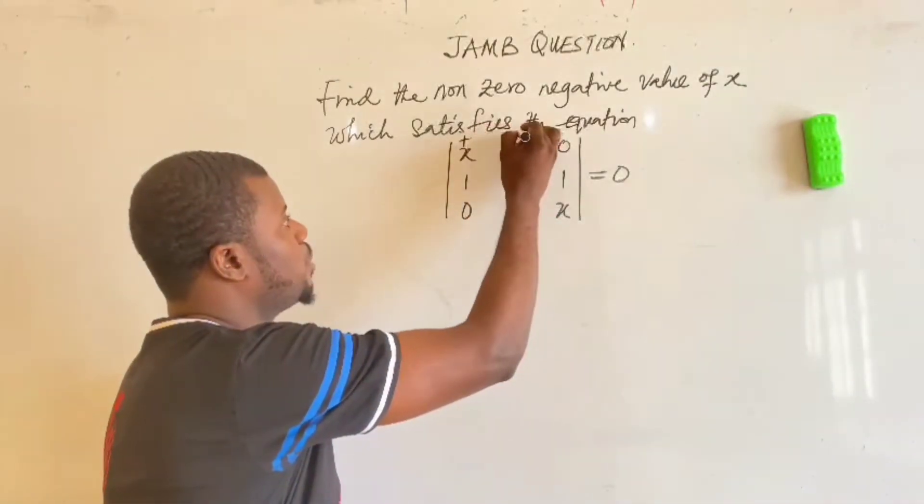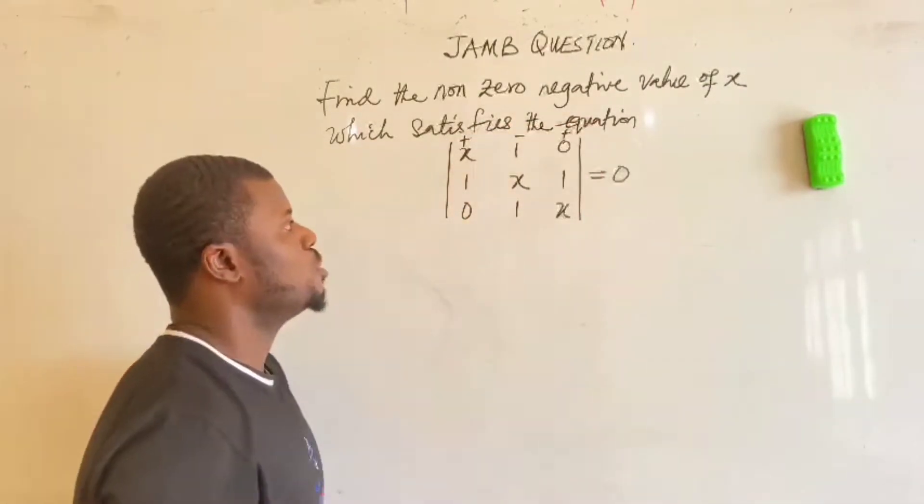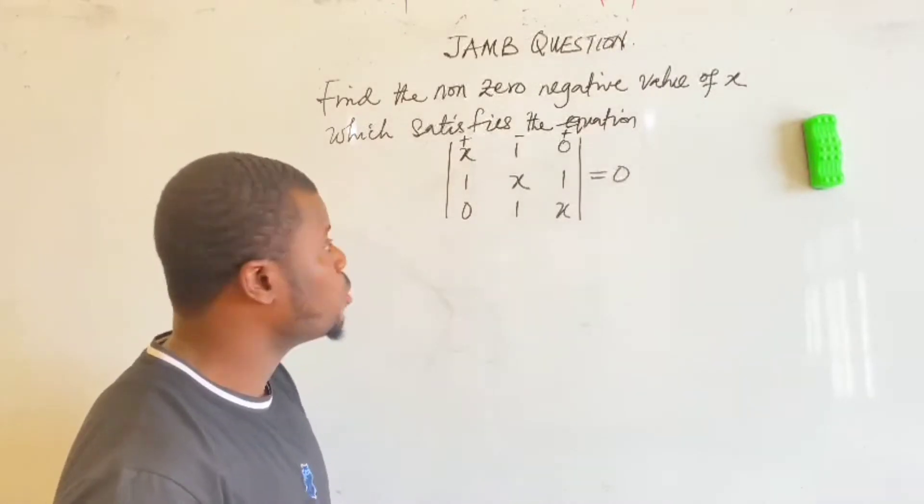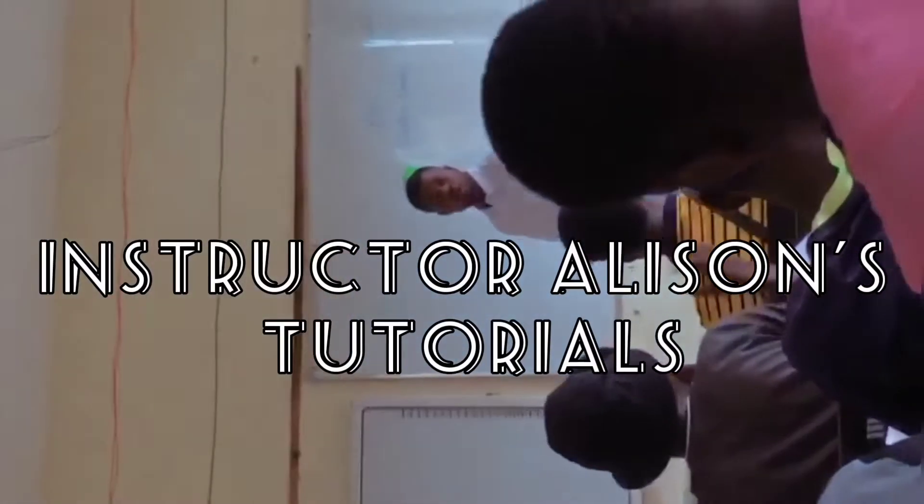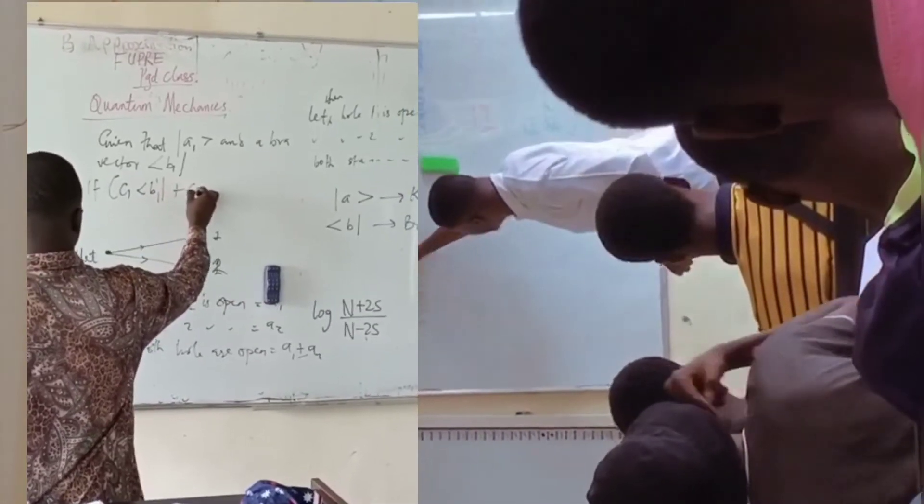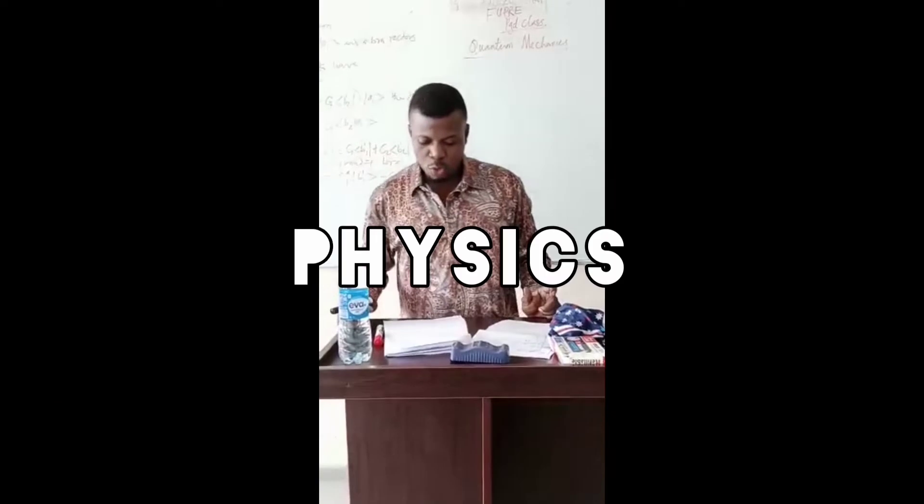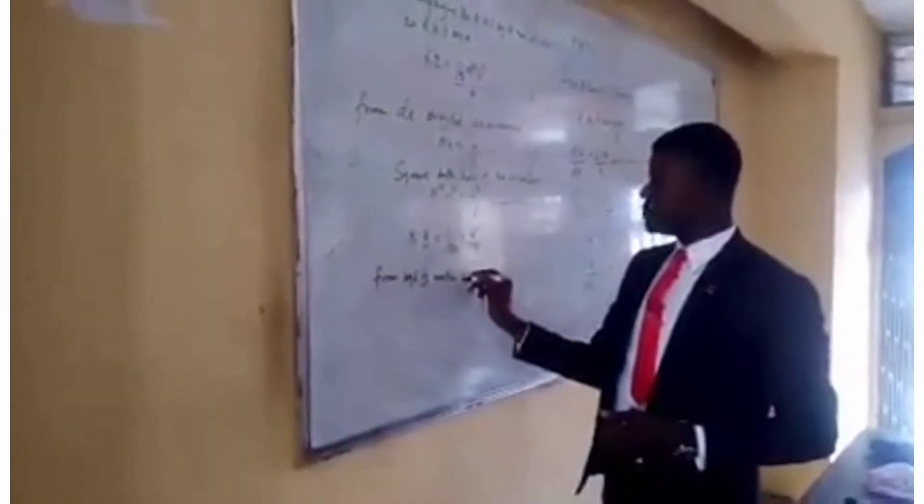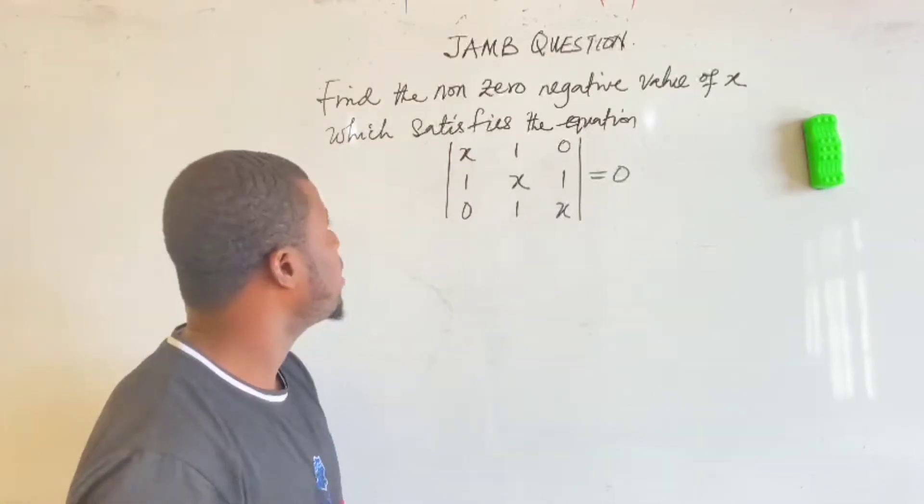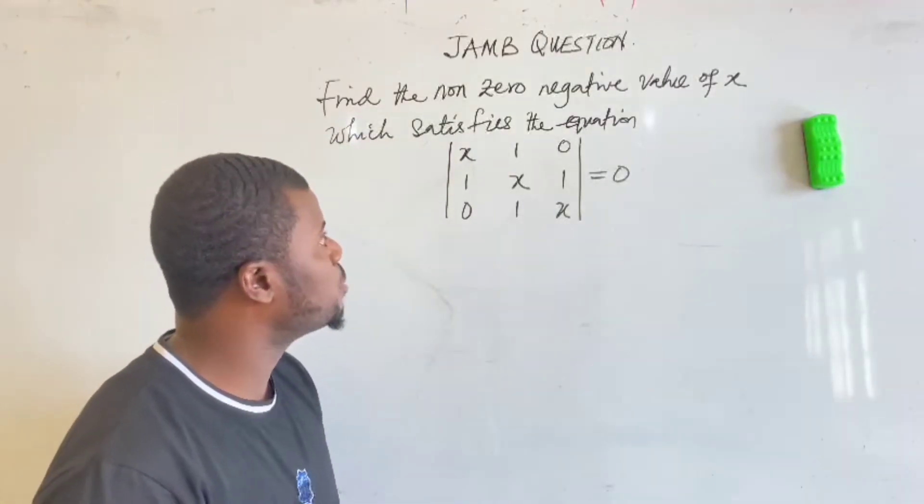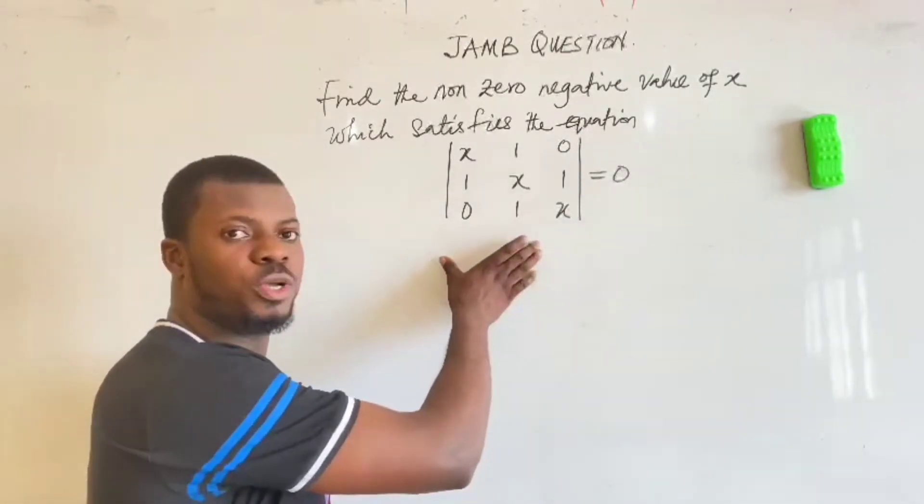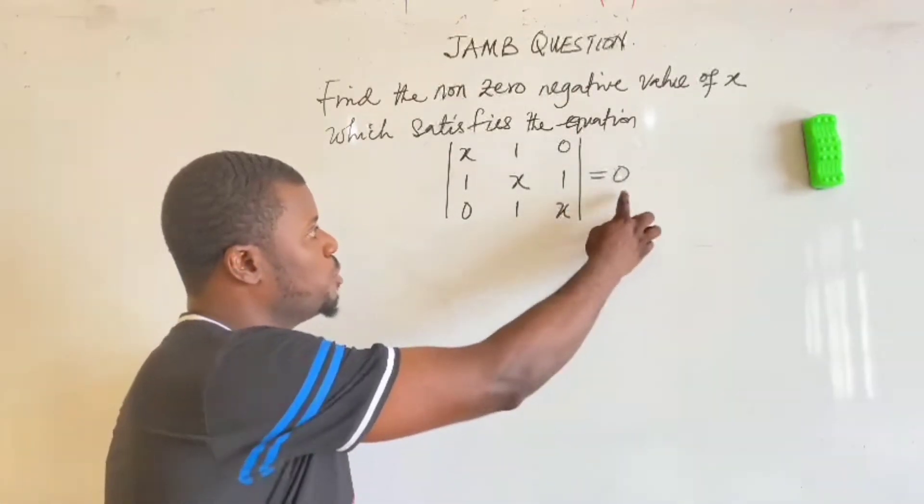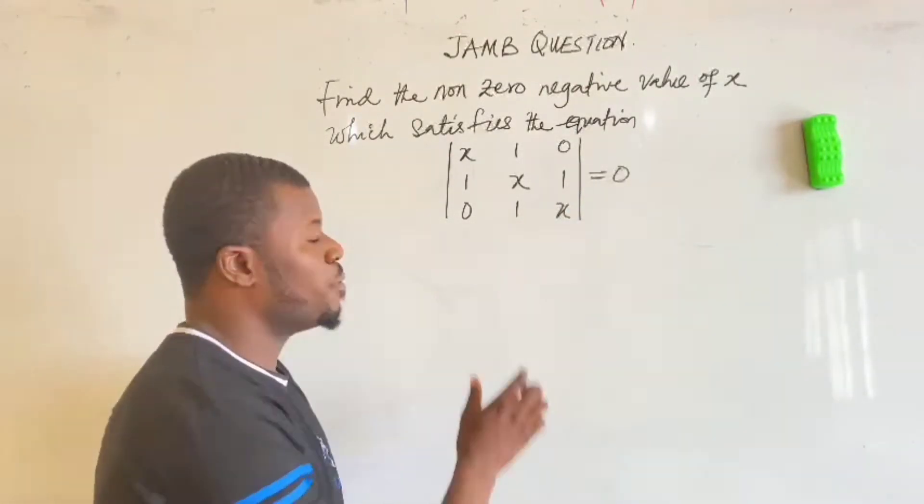It has a default sign there, plus or minus plus. So what next thing we need to do? We're going to solve the determinant of this. And what is happening here? We have a problem to solve, and that is: find the non-zero negative value of x which satisfies the equation. And this is the equation. All of this equals zero. And this takes the format of a matrix.